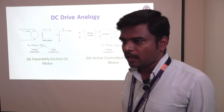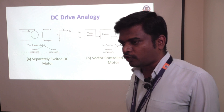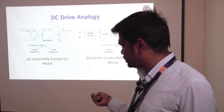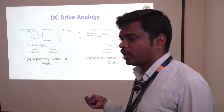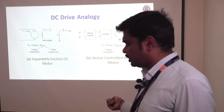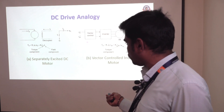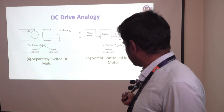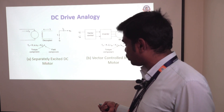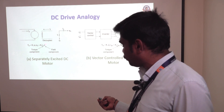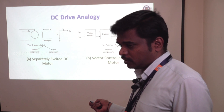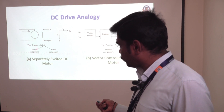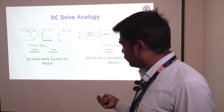Next we need to understand the implementation of vector control in terms of the separately excited DC motor with respect to the induction motor. In a separately excited DC motor, you can see the decoupled nature of armature and field current with the phasor diagram provided. The armature is not coupled with the field — when varying the armature, torque or flux will vary, but the field will not be disturbed. Suppose if I am varying the field component, the torque component will not be varied, and vice versa.